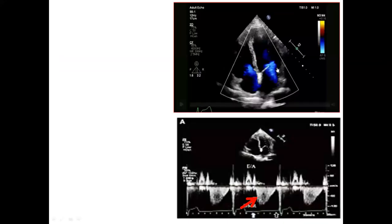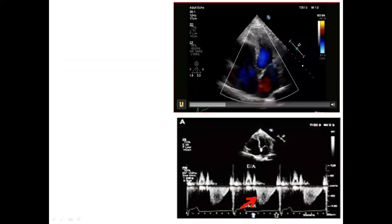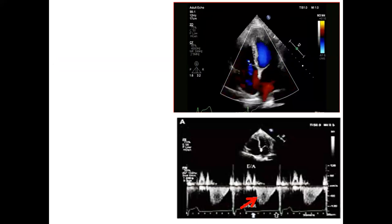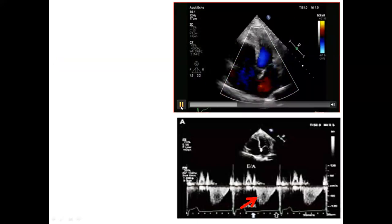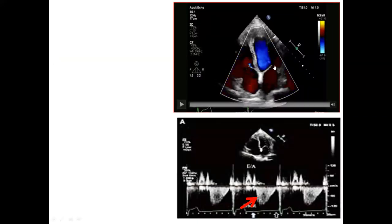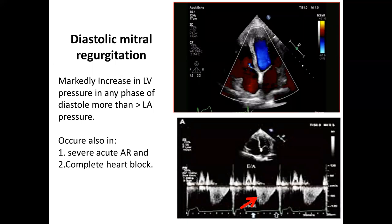One rare finding to mention: diastolic mitral regurgitation. This represents regurgitation during diastole when LV pressure markedly exceeds atrial pressure at any phase of diastole. It also occurs in severe acute aortic regurgitation and complete heart block.